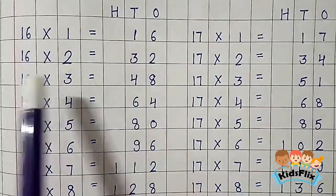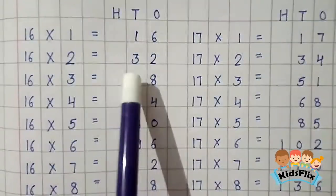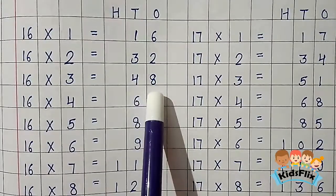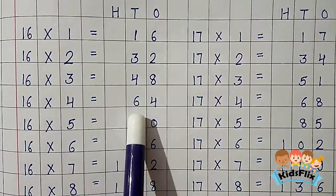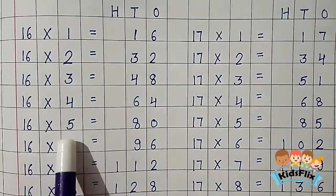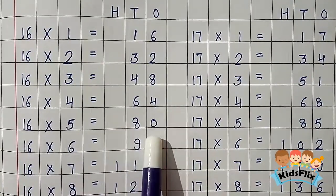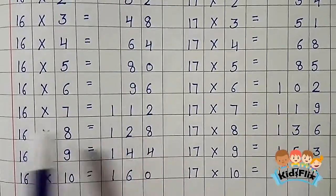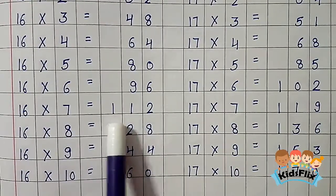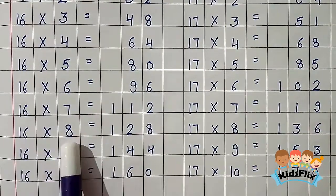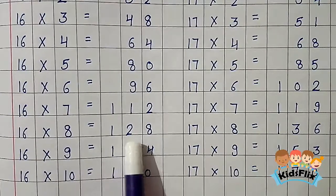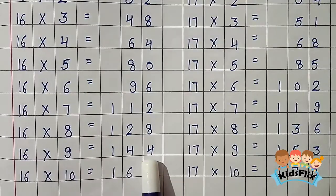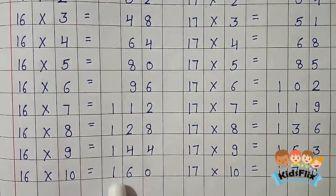16 1s are 16. 16 2s are 32. 16 3s are 48. 16 4s are 64. 16 5s are 80. 16 6s are 96. 16 7s are 112. 16 8s are 128. 16 9s are 144. 16 10s are 160.